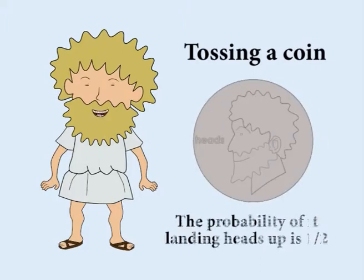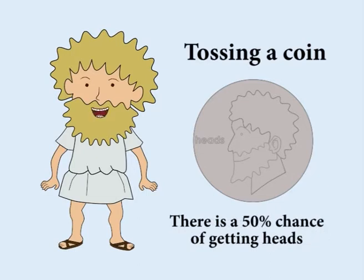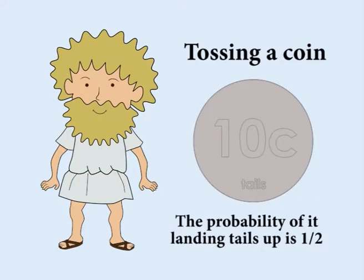The probability of the coin landing heads up is one-half, which is the same thing as saying there is a 50% chance of getting heads. Similarly, the probability of the coin landing tails up is also one-half.